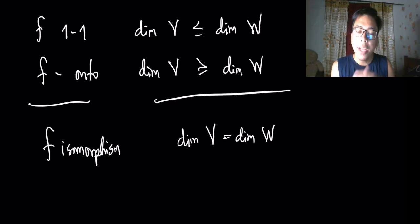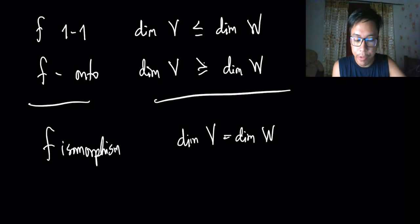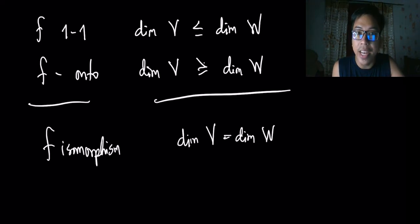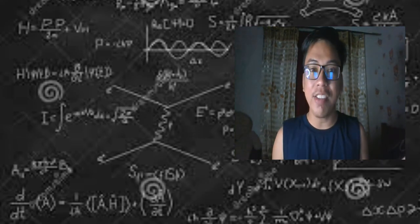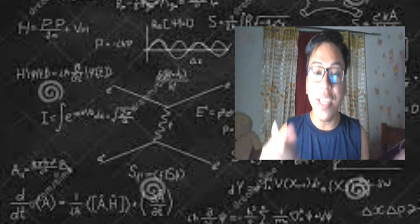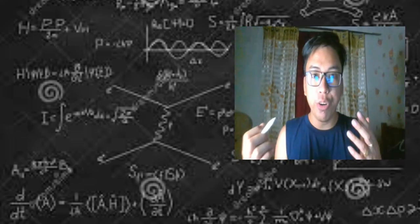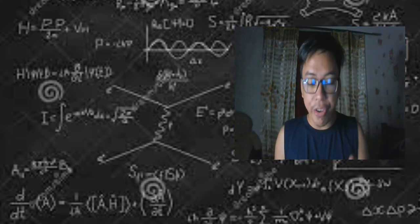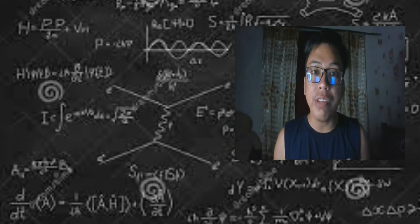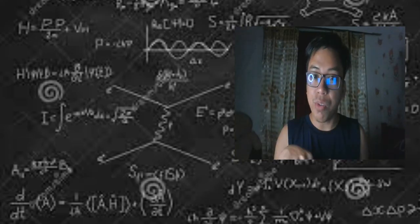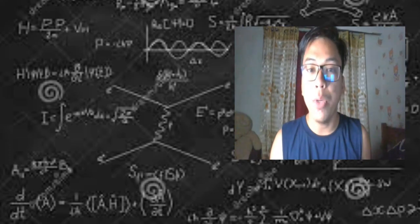Now you might wonder: if dim(V) = dim(W), does it necessarily follow that f is an isomorphism? In other words, does the converse hold? We will answer that in the next video. Thank you for watching and for your support. This covers the basics of isomorphisms of linear transformations — don't forget to subscribe for upcoming videos.